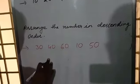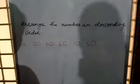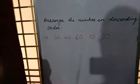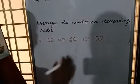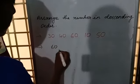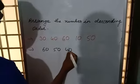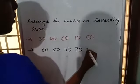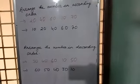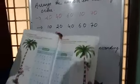Next one is descending order. You have to arrange the numbers in descending order. Descending order means from greater to smaller. So, first you will write the greater number, that is 60. 60 is the greatest number among them. Then after that 50, then 40, then 30. Then last one is the smallest number, that is 10. Like that, you have to do all the exercises in your maths book and keep revising all these topics in your rough copy.